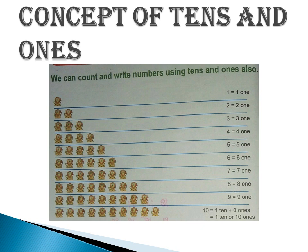But to write 10 or any two digit number, we need two places: tens and ones. So 10 is equal to 1 ten plus 0 ones.